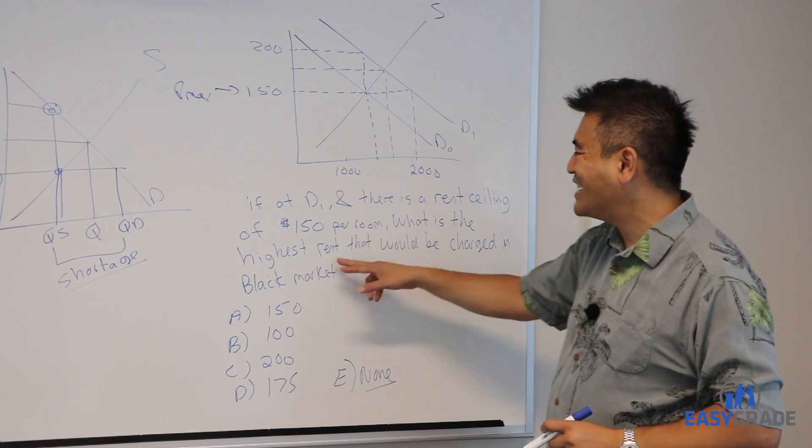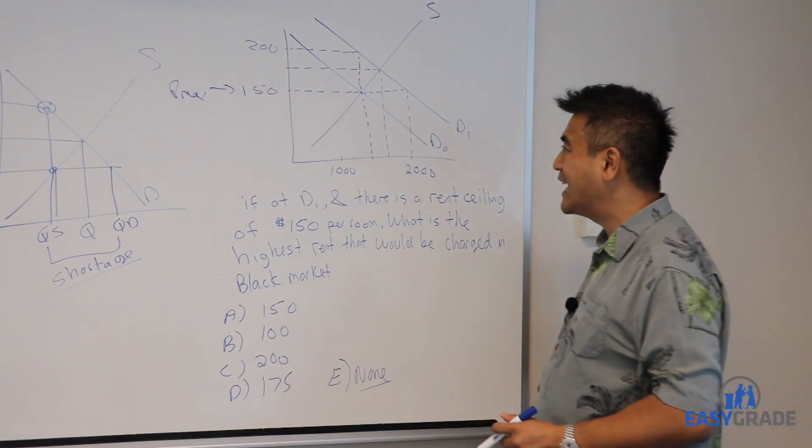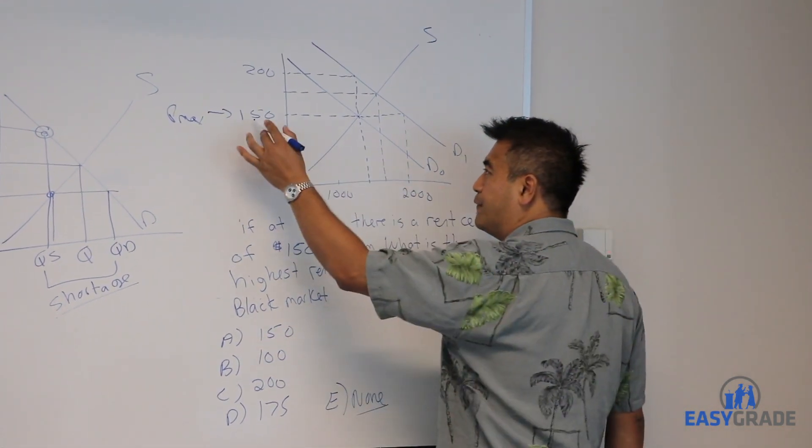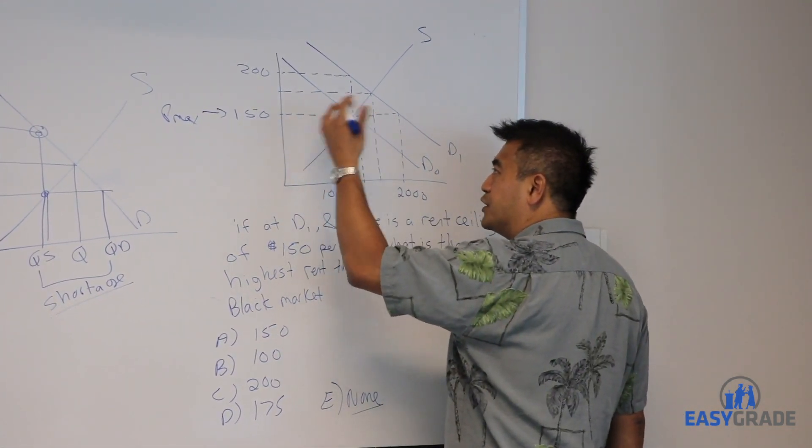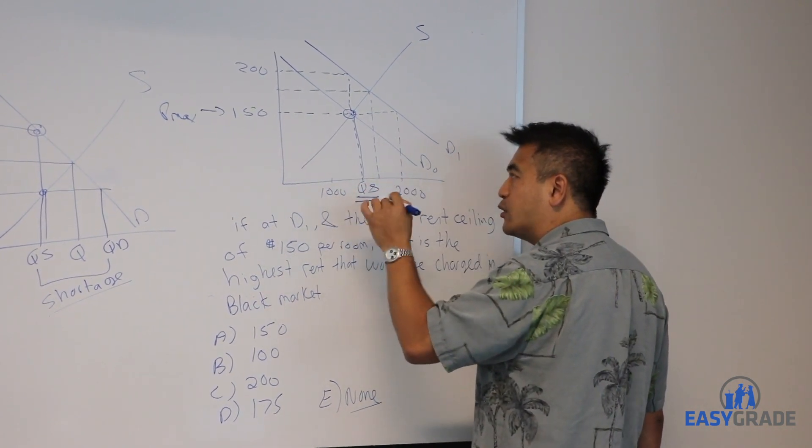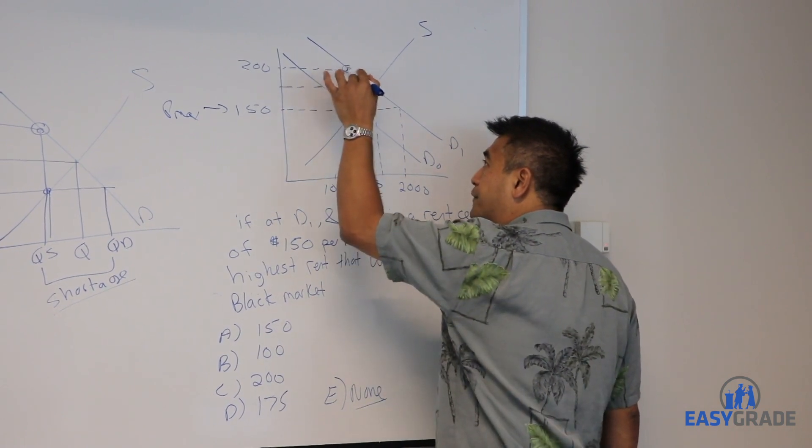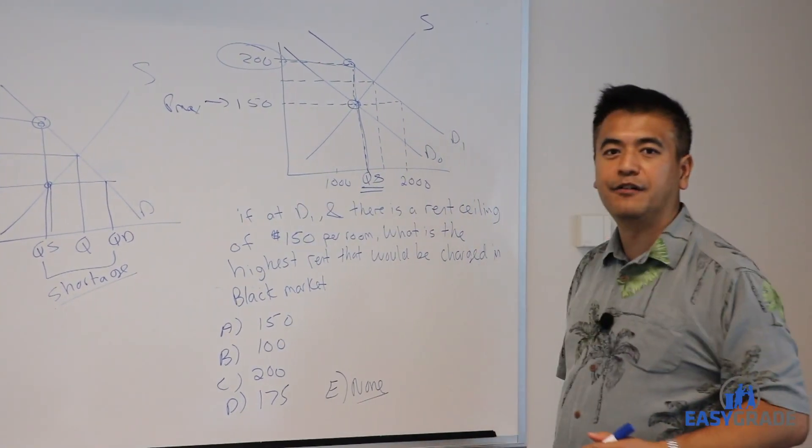What is the highest rent that would be charged in the black market? Once again, if you set a ceiling at 150, the units produced will be at the supply curve. That's the quantity supplied. At this quantity supplied, you have to then look to the demand curve to find what they're willing to pay, which is 200.